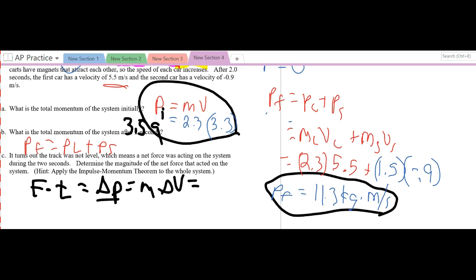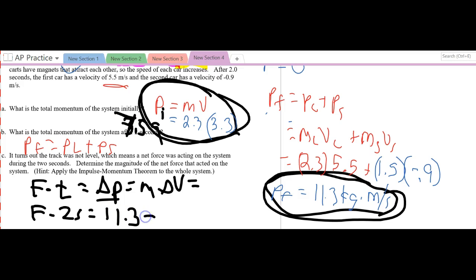So now, let's give it a shot. So I need force, I don't know that, that's what I'm looking for. My time, two seconds have elapsed, equals the change in momentum, which is momentum final minus momentum initial. That wasn't 3.59, this was 7.59. So final would be 11.3 minus 7.59 divided by 2.